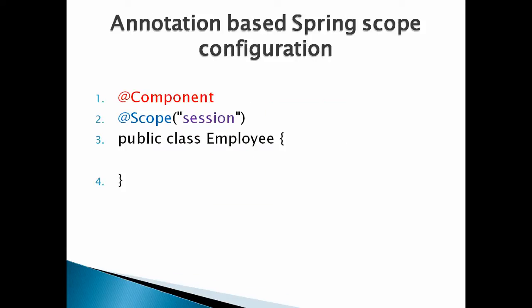The annotation used to configure a bean in a particular scope is as follows. First, create a Java class. Second, make it a Spring bean by adding the @Component annotation. Third, place the @Scope annotation and provide it a scope value, such as prototype or session. Spring will automatically take care of the scope for that particular bean.